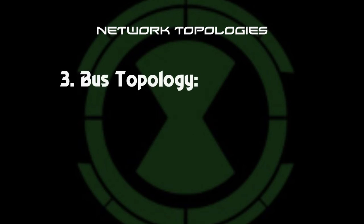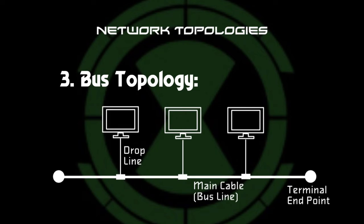Next, the bus topology. There is a main cable and all the devices are connected to this main cable through drop lines. Each computer is connected to a drop line. Since all the data is transmitted over the main cable, there is a limit on the number of drop lines and the distance the main cable can have.